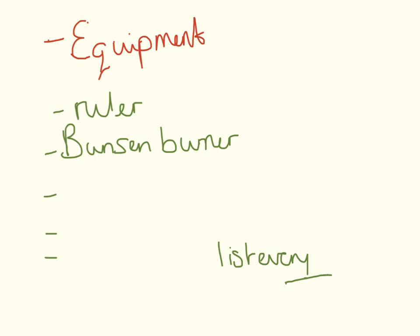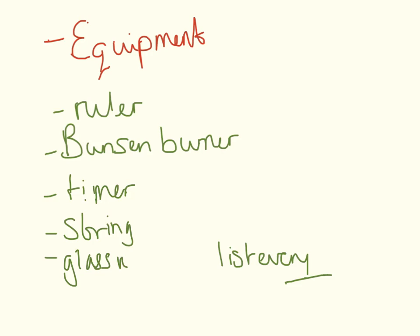The equipment list is exactly what it sounds like — it is a list of all the equipment you are going to use. List everything. If you're going to use a timer, list that. If you're going to use string, list that. If you're going to use a glass rod, do not leave anything out. List every single bit of equipment you can think of. And if you really want to make sure you get the top marks, just describe briefly, very briefly, what you are going to use each piece of equipment for.